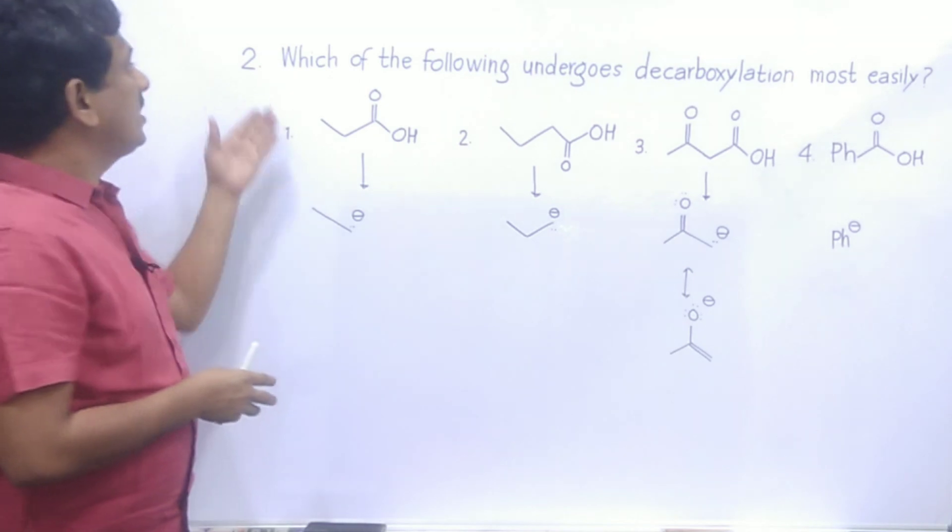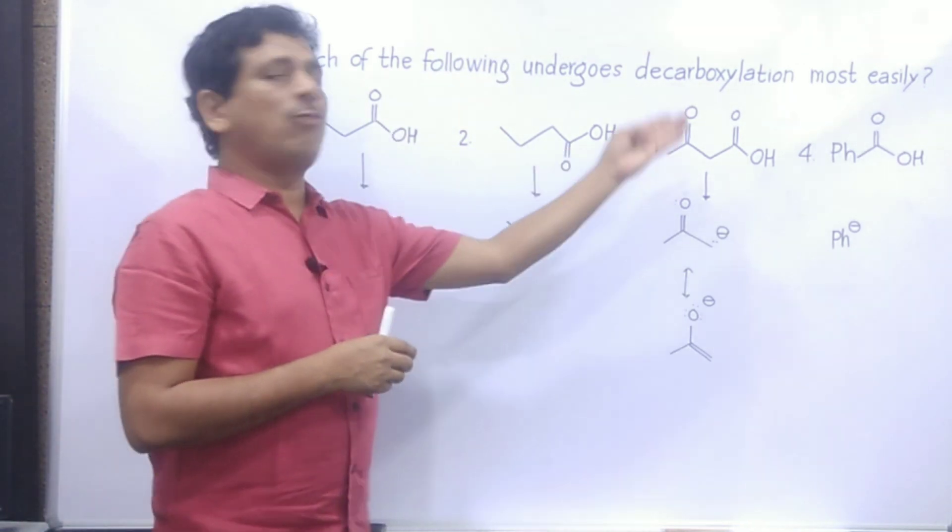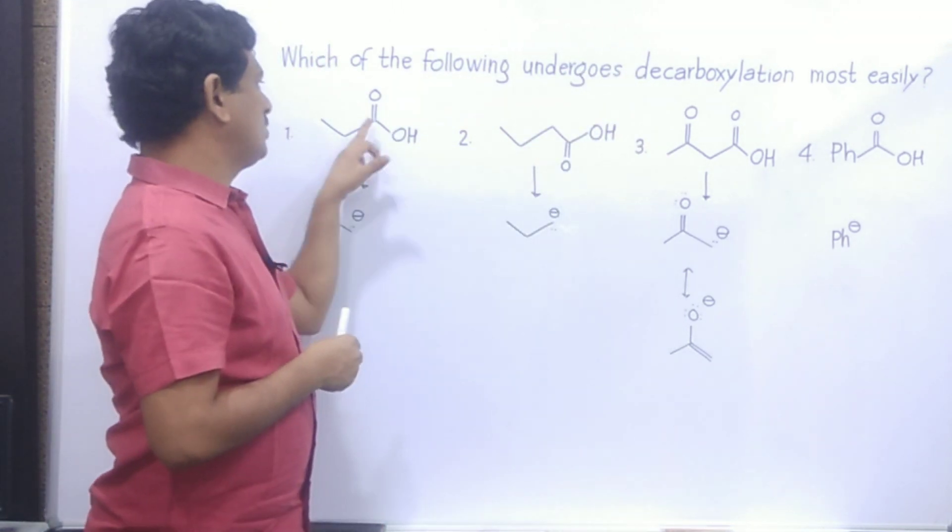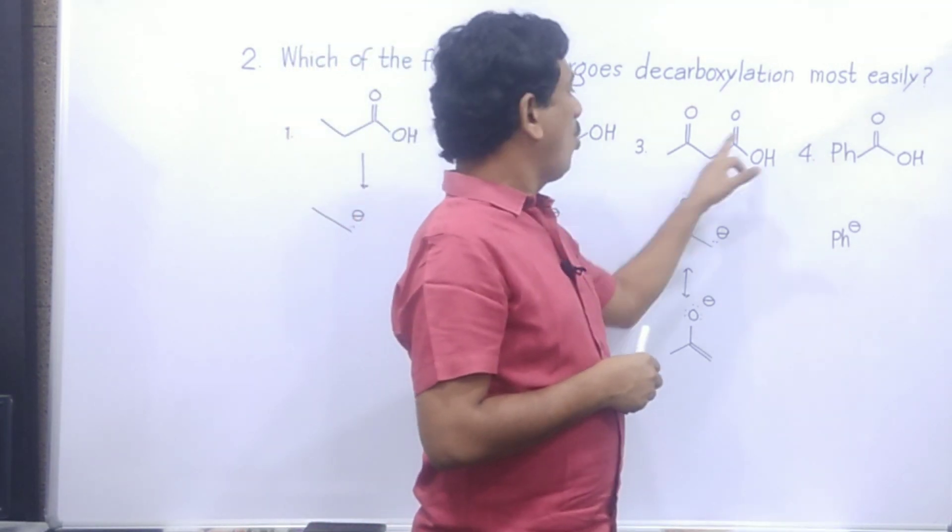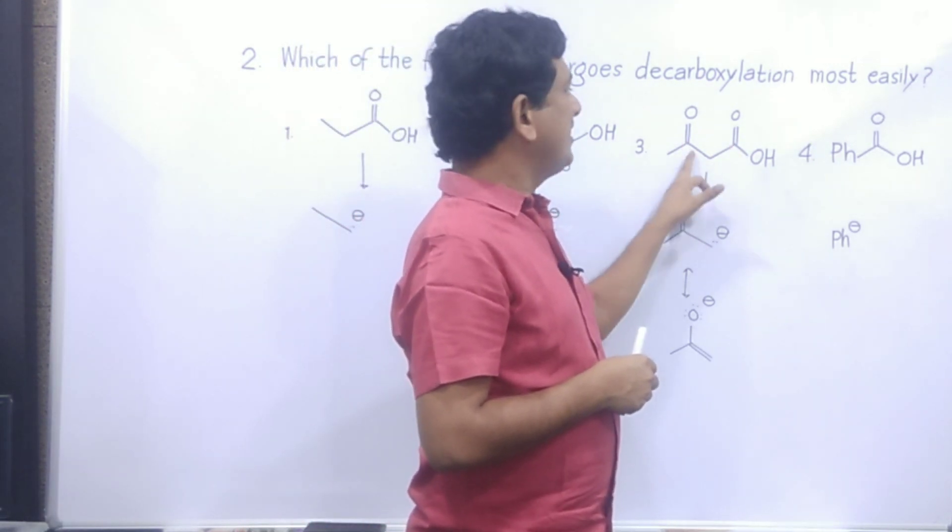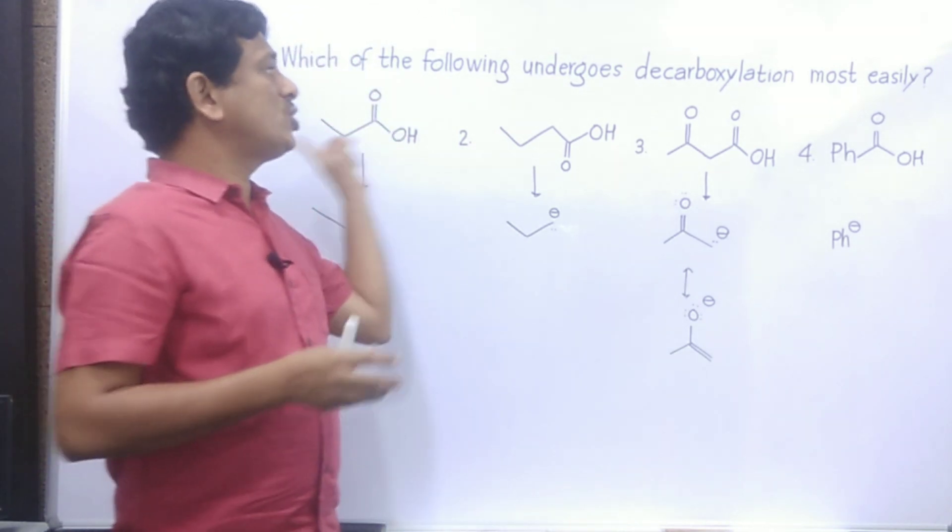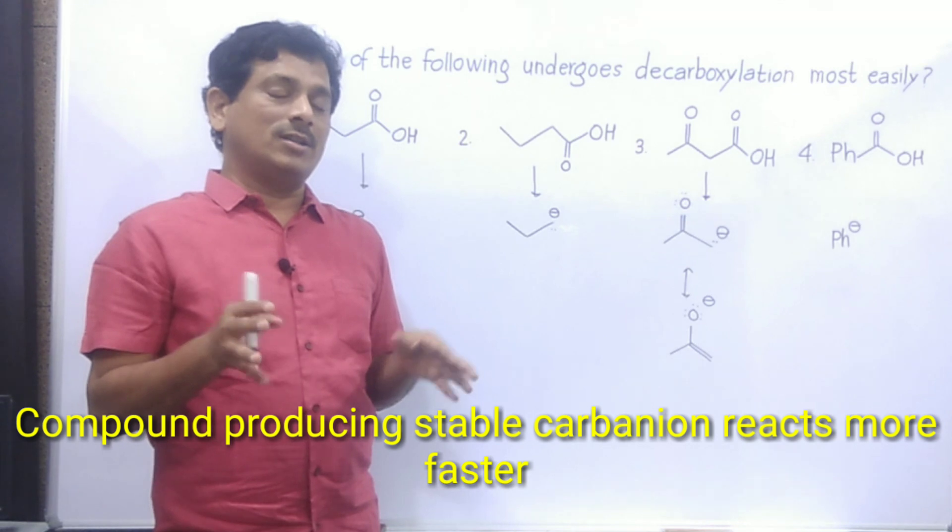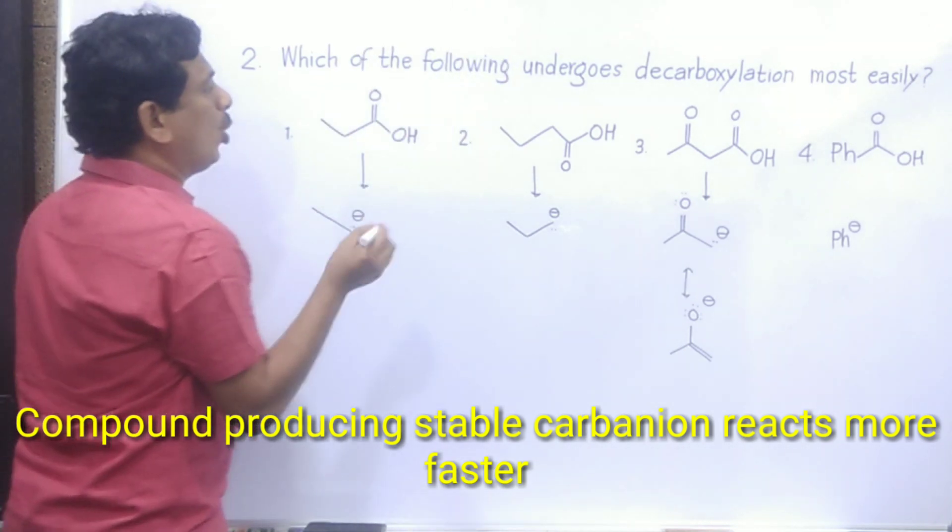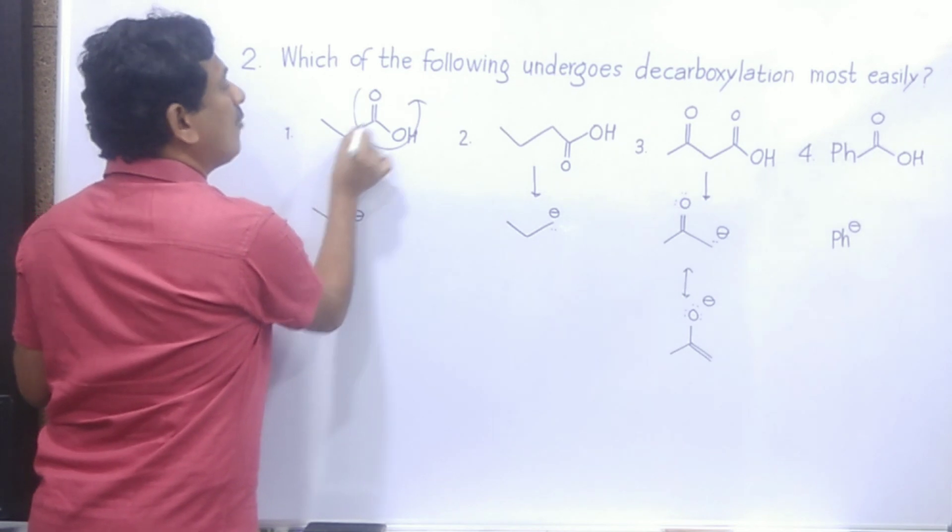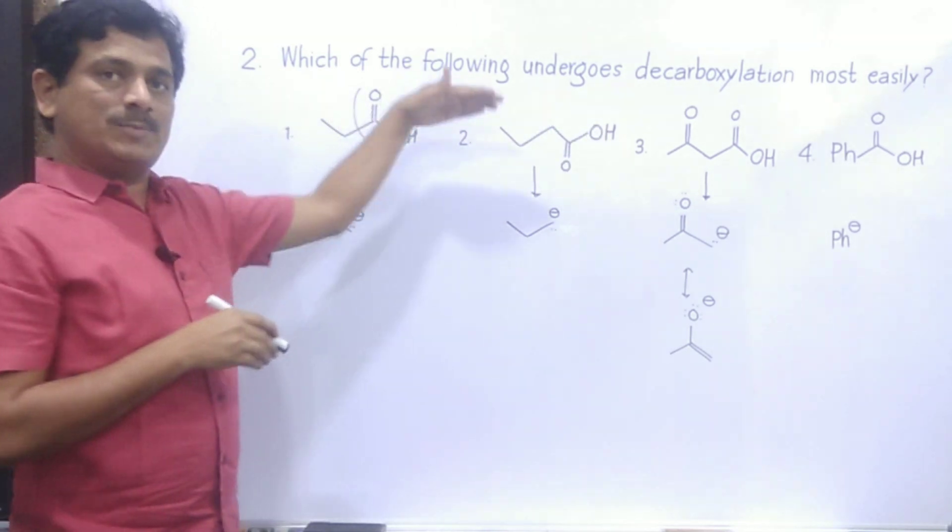The next question on this part is asked in this way: which of the following undergoes decarboxylation most easily? And we have been given four carboxylic acids. The first one is propanoic acid, second is butanoic acid, third is 3-oxobutanoic acid, and fourth is benzoic acid. Now in order to understand which of these compounds reacts faster, we have to think about the stability of the carbanion that is to be formed. In every compound, this COOH is going and the carbon on which COOH is there, a negative charge appears. So in every case I have written their respective carbanions.